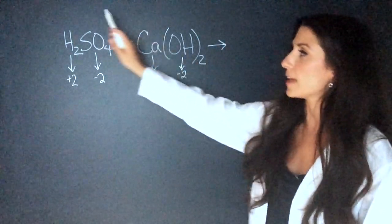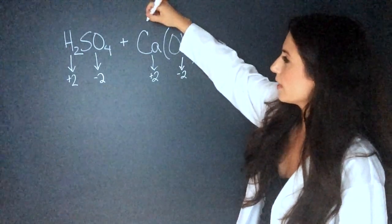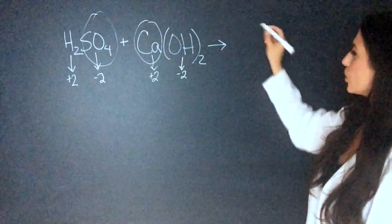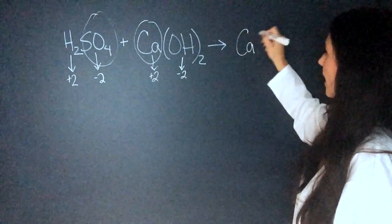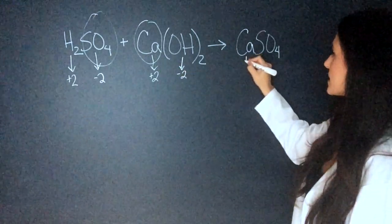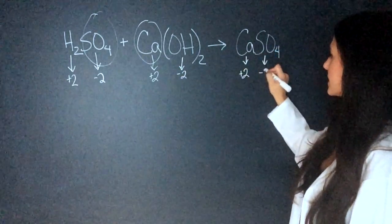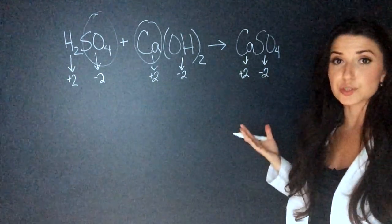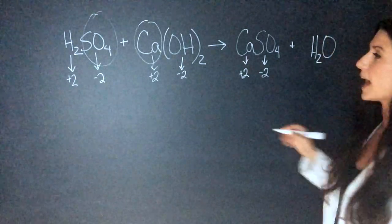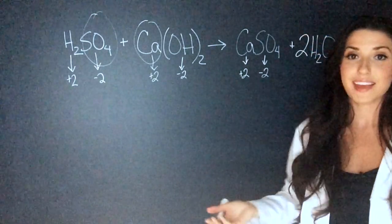We know that the OH and the hydrogens are going to form water, so the salt is going to be the calcium and the SO₄. So we'll write it out: CaSO₄. Calcium is +2 and SO₄ is -2, so it's neutral and we're good. Then we add H₂O. To balance this equation I just have to put a 2 in front of the water and we're done.